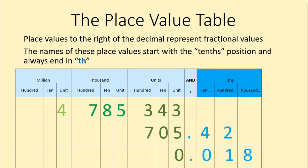Next, I have a decimal value which is not a whole number at all — there is no whole number part, because I've got zero to the left of the decimal point. I always need to have some digit on the left of the decimal point, even if it's a zero, just to make it very clear where the decimal is. But in this case, I don't need to say 'zero and'. I can just name the multi-digit number after the decimal point: 18. Then look at the place value of that last digit — this eight is in the thousandths position. So this is 18 thousandths.